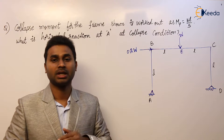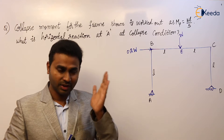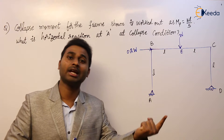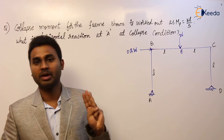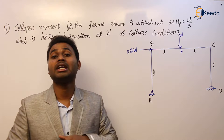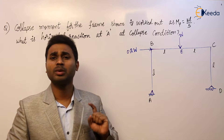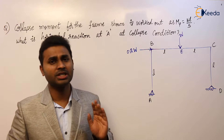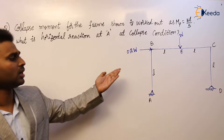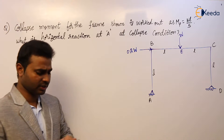As I said in previous questions, we discussed how to calculate collapse load in beam mechanism, sway mechanism, and combined mechanism. But whenever we know that combined mechanism is taking place in the given frame, directly go for calculation of collapse load in combined mechanism only — no need to consider beam mechanism and sway mechanism. So here I am directly going for the combined mechanism.